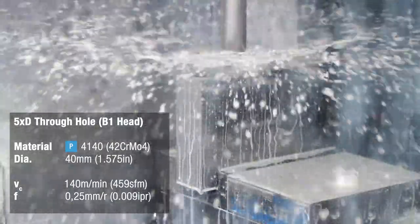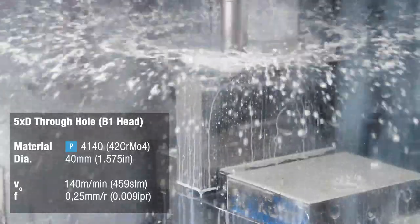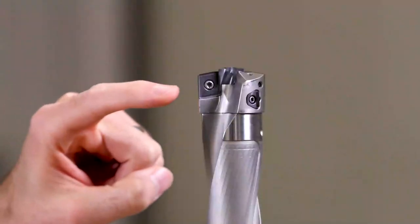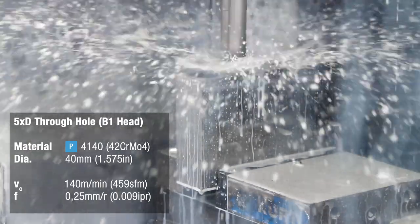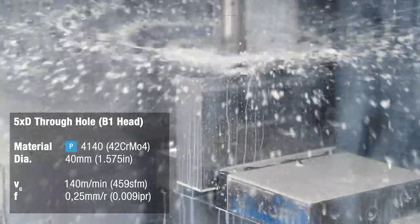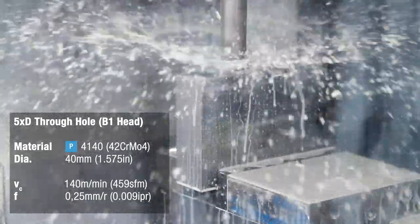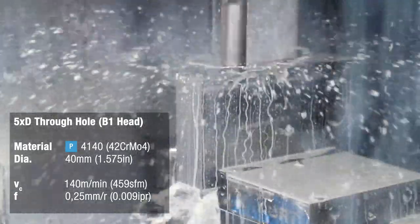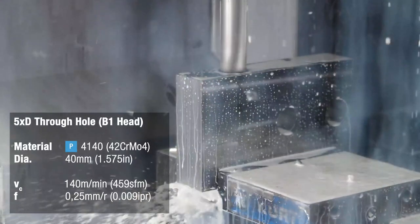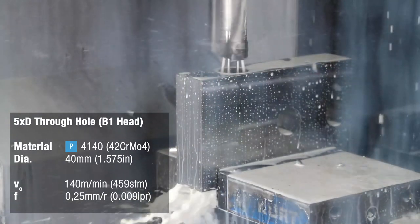Comparing the outboard inserts of the B1 head and the A1 head, you see the B1 head has rectangular shaped inserts. They provide more contact to the hole and the corner radius acts like a wiper edge. So we should see a much different surface finish. We're applying the B1 head with the same parameters.